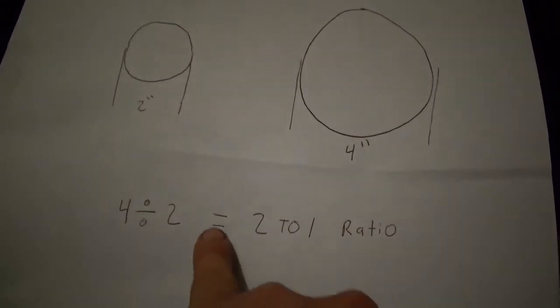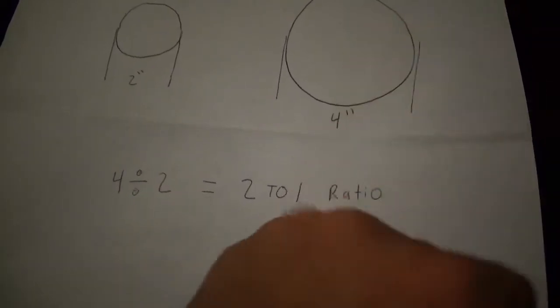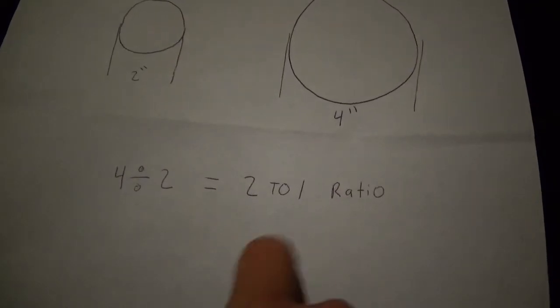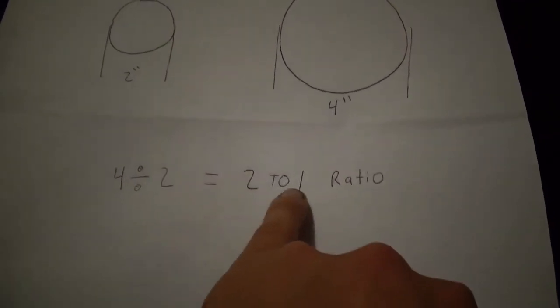Pretty much you divide your big pulley by the small pulley. Say it's four-inch, two-inch. You metric guys, you'd just be doing the same thing but using centimeters. Then you end up with a two-to-one ratio.